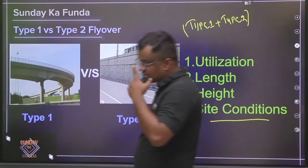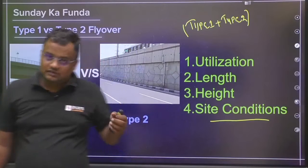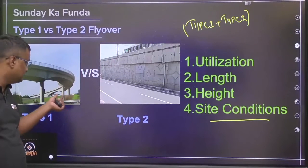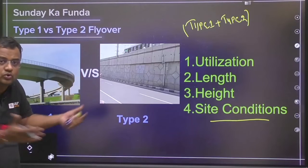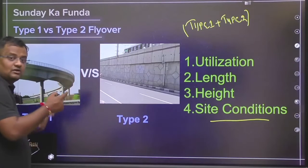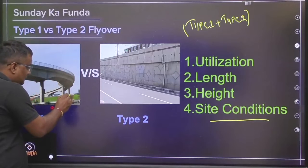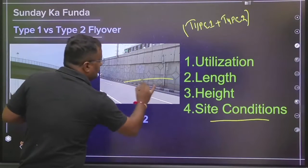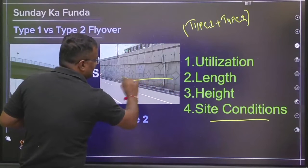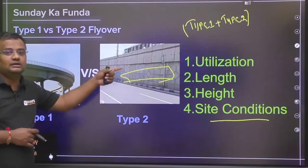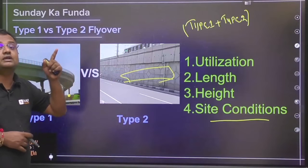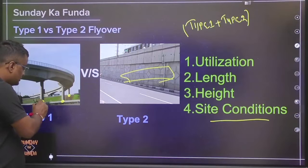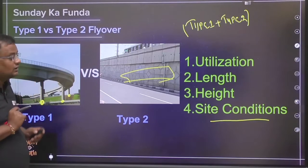Regarding site conditions and soil bearing capacity: if the soil does not have very high bearing capacity and punching failure is a concern, the load must be distributed over a larger area. In type one, the whole load transfers to certain concentrated points. In type two, the load is distributed over the entire base area. So if the bearing capacity of the soil is less, type two is preferred because type one concentrates the total load in a very small area.